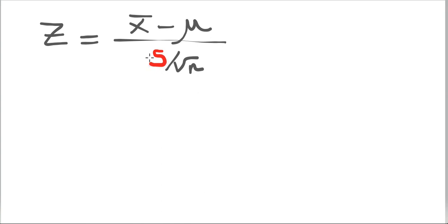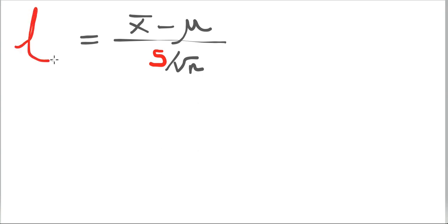When we replace sigma with s, the thing you're calculating is no longer considered to be Z. We give it a new name, and that new name is T — so it becomes a T-distributed T-test, and it is no longer a Z-test.